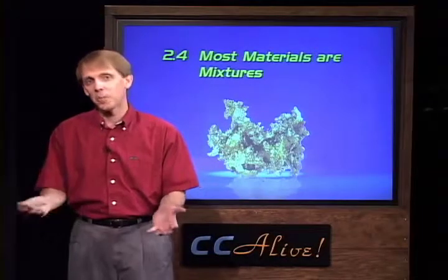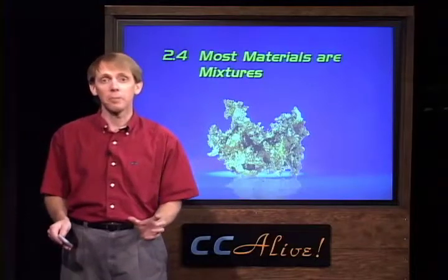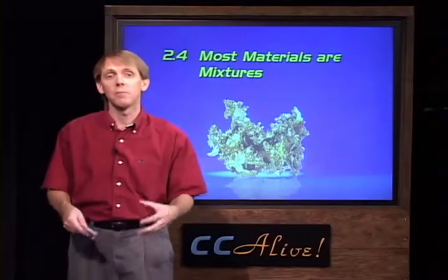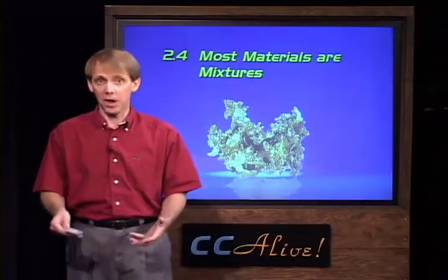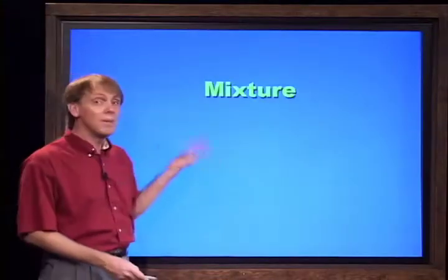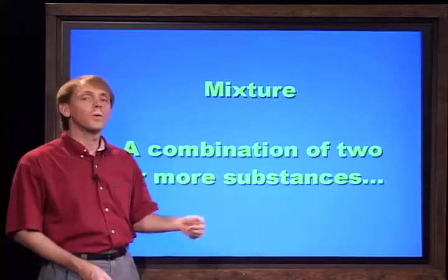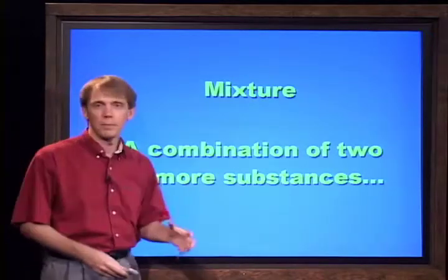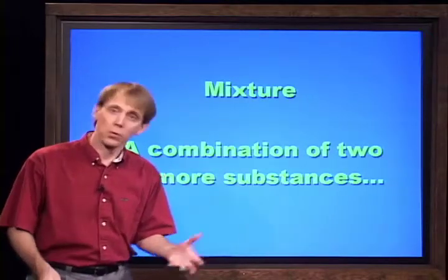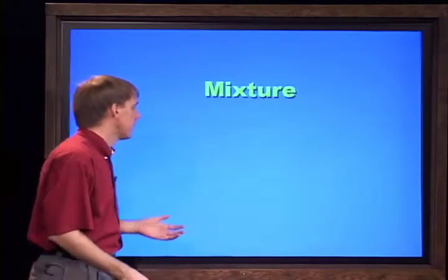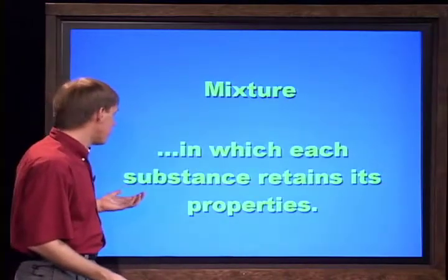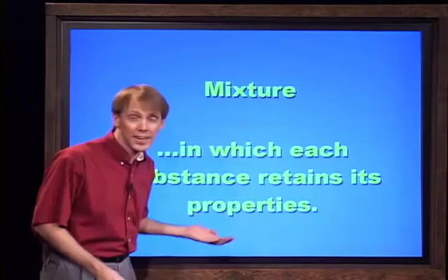You know about elements and you know about compounds. As it turns out, most things in our environment are made of a mixture of elements and compounds. From the point of view of chemistry, a mixture is the combination of two or more substances — by substance we mean an element or a compound — and within a mixture, each of those substances retains its properties.